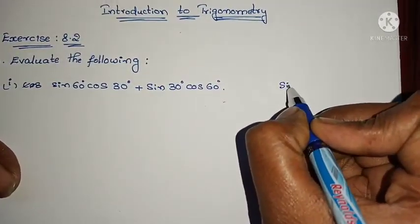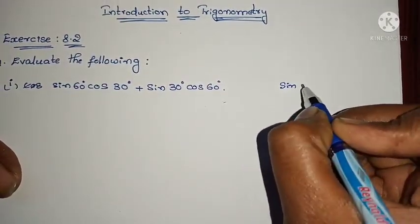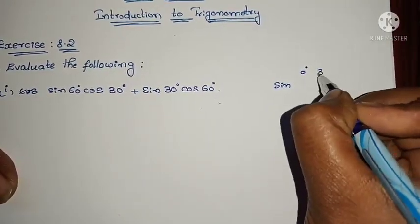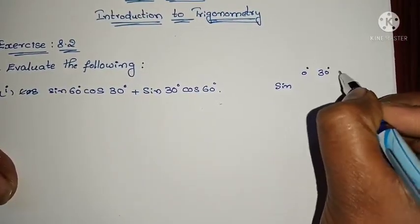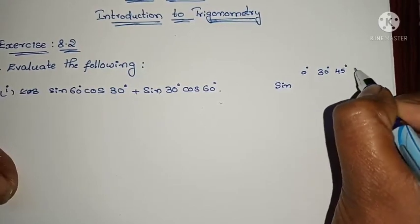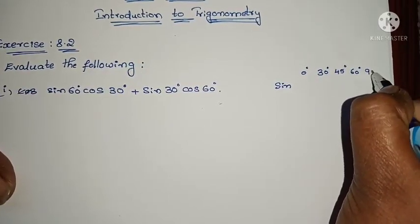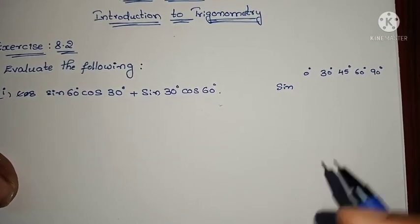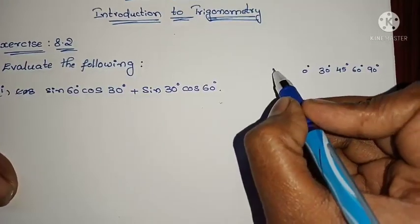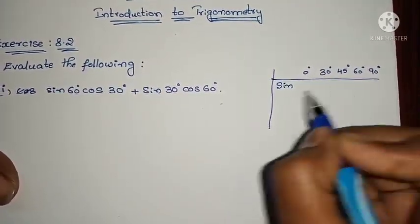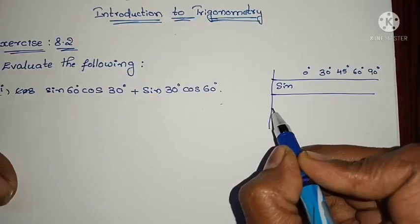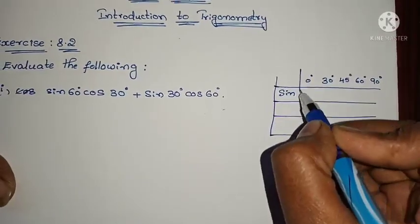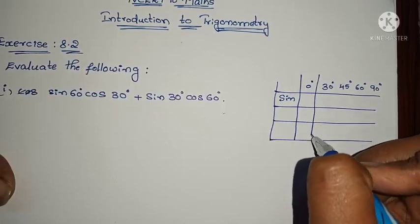In the last video, I have explained about the trigonometric ratios for 0 degrees, 30, 45, 60 degrees and 90 degrees. Before doing any problem, just tabulate these values at the right side corner. Then it will be very easy for you to do the problems.